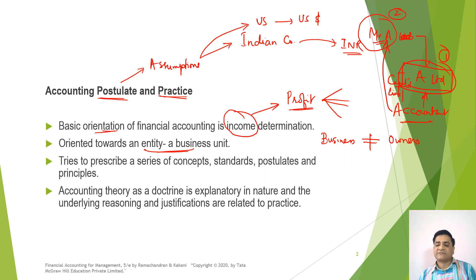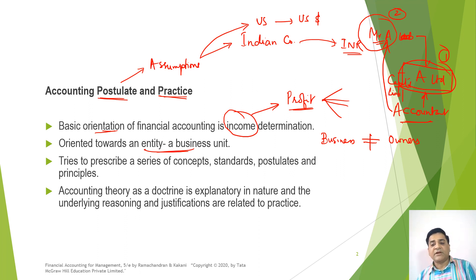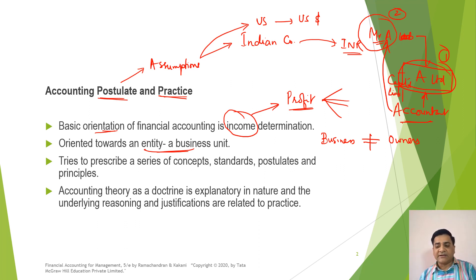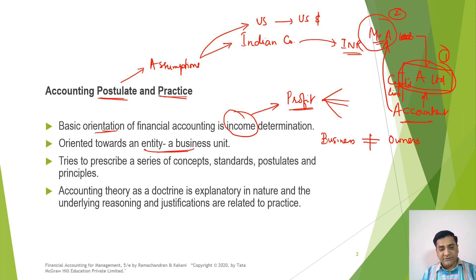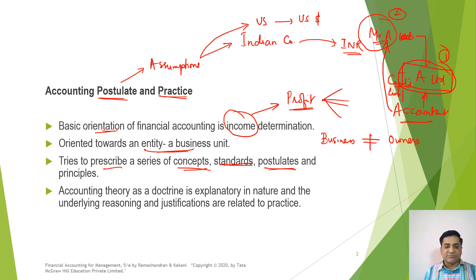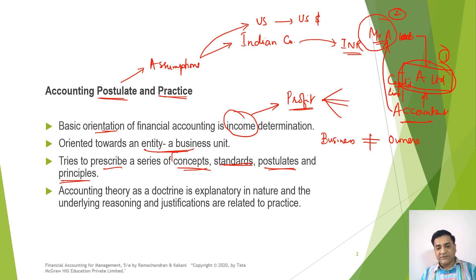Good accounting practice cannot be based on trial and error methods. Why? Because the cost involved in accounting would be very high. If we are following the trial and error approach and something goes wrong, then the cost of reverting back would be high. So for good accounting practice you need to have a series of concepts, principles, and standards. Concepts mean the basic ideas; standards mean the basic rules; postulates mean the various assumptions; and principles mean the rules which are made by the organization to be applied by themselves. So accounting is a series of concepts, standards, postulates, and principles.